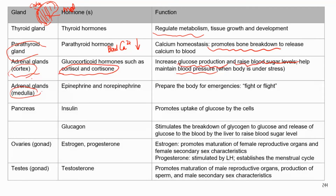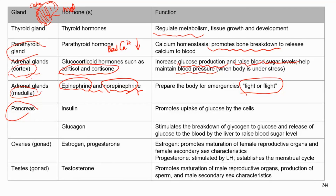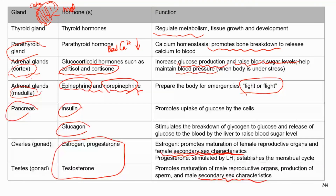The medulla part of the adrenal gland produces epinephrine and norepinephrine, which are involved in the sympathetic nervous system and prepare your body for the fight-or-flight response. The pancreas secretes insulin and glucagon to regulate blood glucose, as covered in the digestive system. Sex hormones secreted by the gonads stimulate the development of reproductive organs, gametes (sperm or eggs), and secondary sex characteristics.